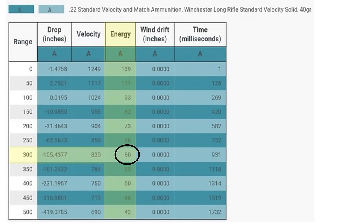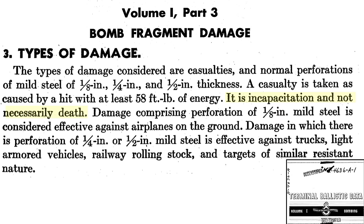For reference, 58 foot-pounds of energy is roughly a .22 caliber long rifle bullet strike from 300 yards. Being struck with a fragment of this energy is likely incapacitation, not necessarily an early death. Fragment perforation of a one-eighth inch thick mild steel sheet would be effective against aircraft parked on the ground. Perforation of a quarter to half inch steel plate is effective against trucks, light armored vehicles, and rolling railway stock.